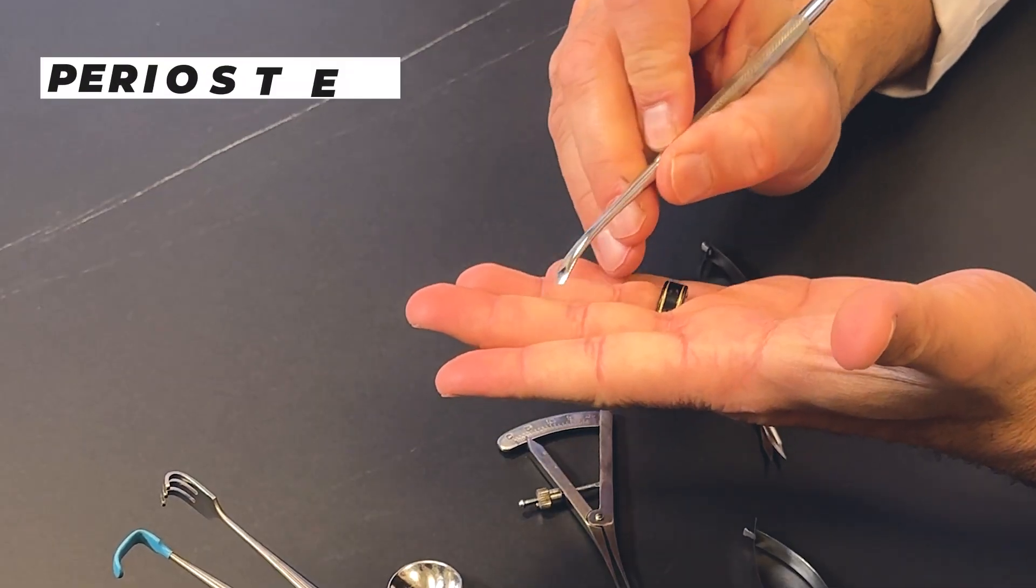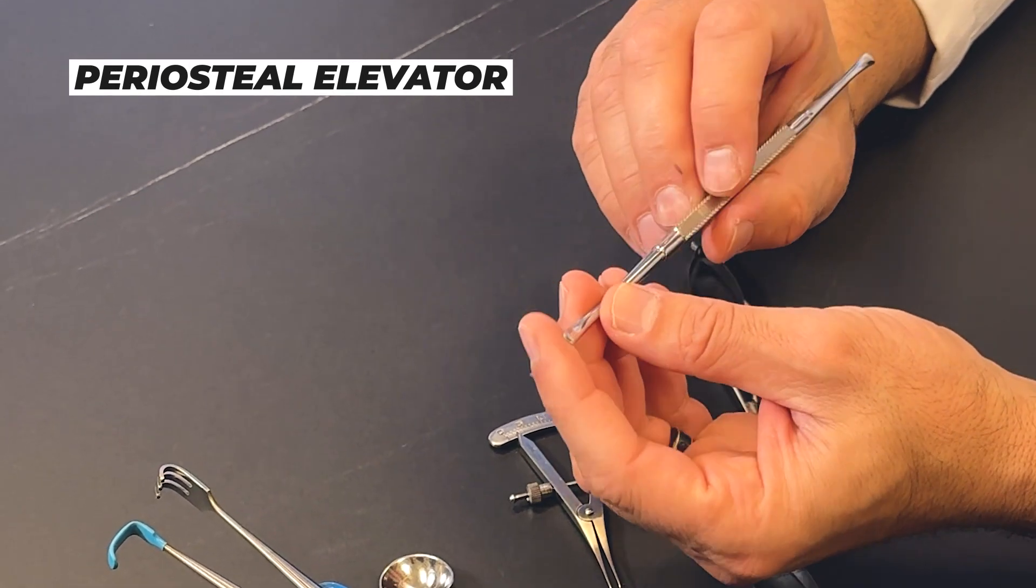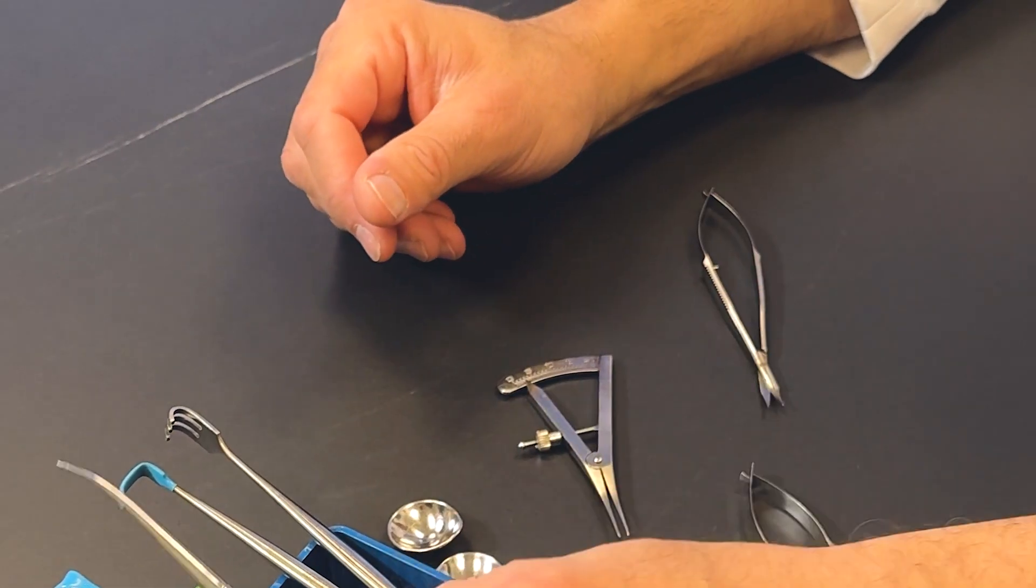It's a periosteal elevator. It really allows you to peel tissue off very carefully without damaging the underlying structures. I use this a lot in my fat repositioning procedures. In my lower lid, when I'm taking off the tissue above the bone, I actually use this elevator to gently lift off the tissue in a subperiosteal plane.